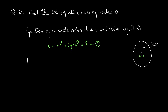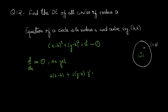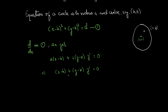Differentiating equation 1 with respect to x, we get 2 into (x minus h) times 1, plus 2 into (y minus k) times dy/dx equals 0. Writing dy/dx as y dash, since d/dx of A square is zero, we simplify to: x minus h plus (y minus k) times y dash equals 0. Let this be equation 2.